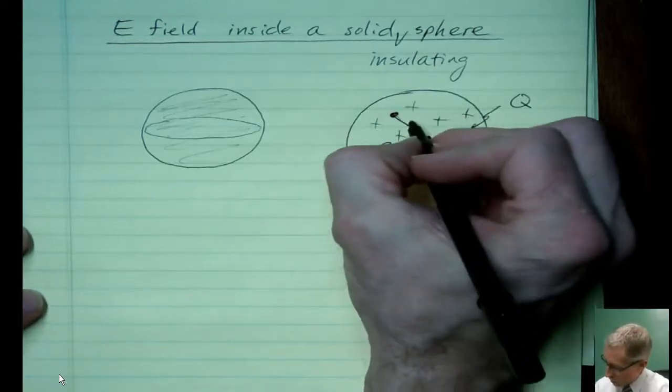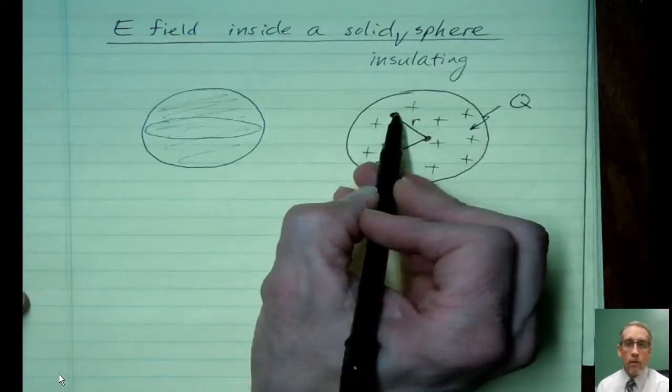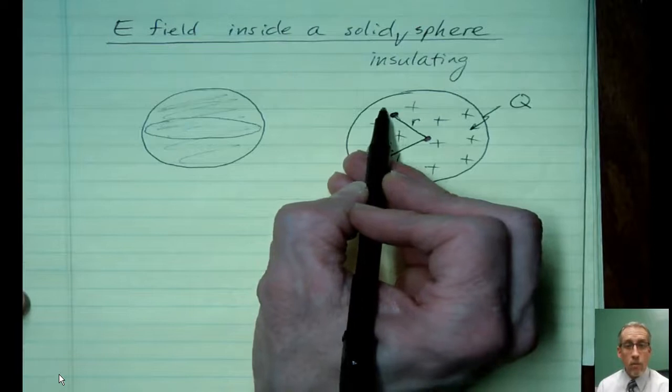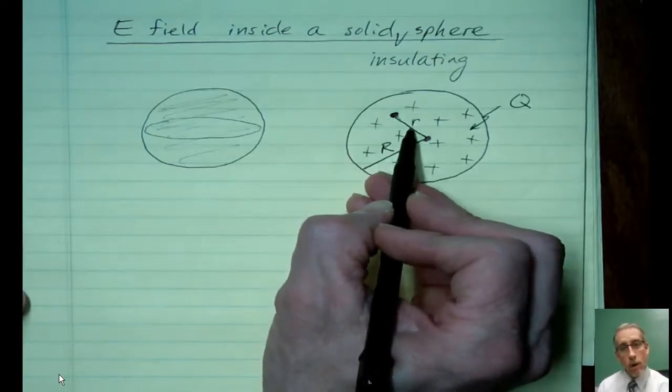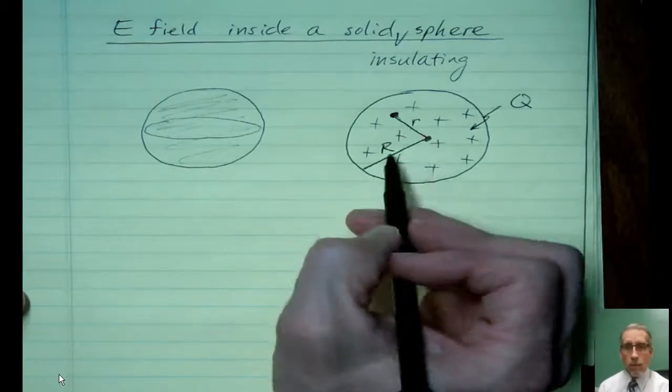Because this distance here, obviously, could be a variable. I'm going to call that little r, because I could take that dot and say, well, what if I want to find the electric field further out? Maybe out here somewhere, or maybe way close to the center in here somewhere. And so that little r and this big R are definitely different things.